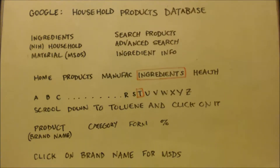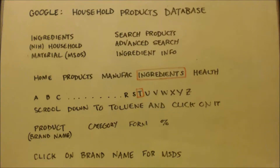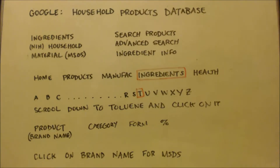First thing you do is look up on Google — it says 'Google Household Products Database.' Punch that into Google and it'll probably be the second or first option. You'll know it's the right option by looking at the second group of stuff: ingredients, NIH household material safety data sheet search, products, advanced search, ingredients info. The one that has those six things below it — that's where you want to go.